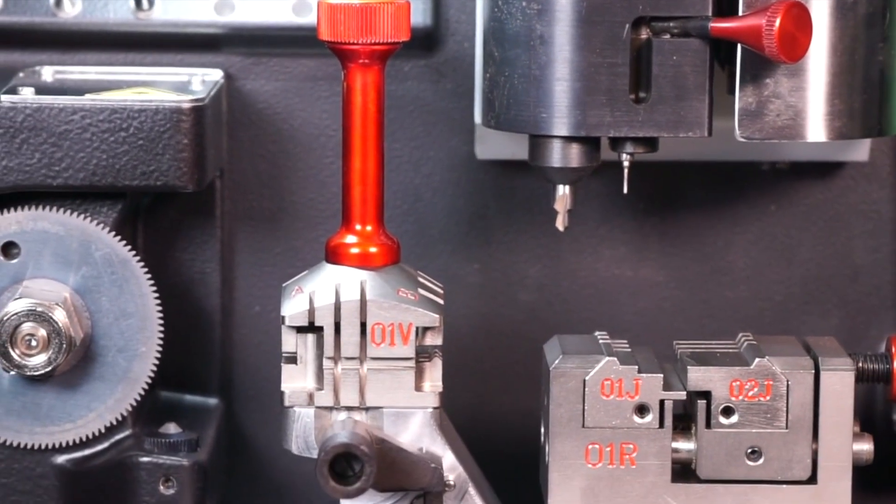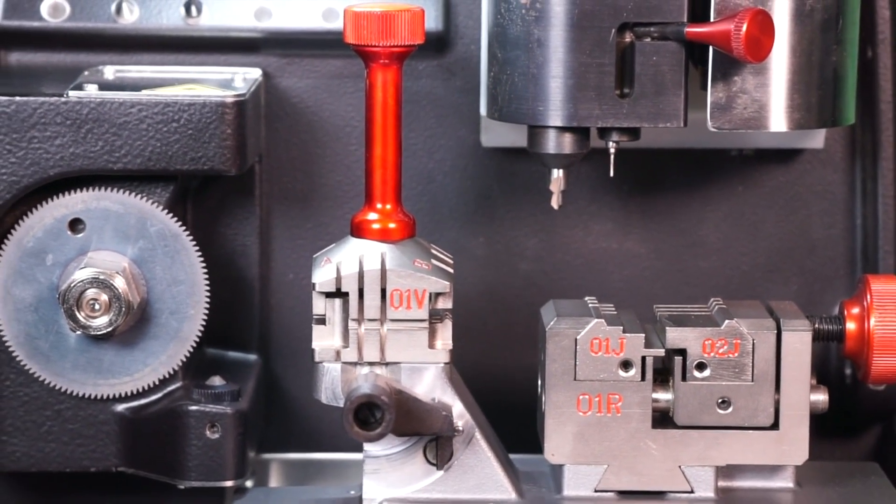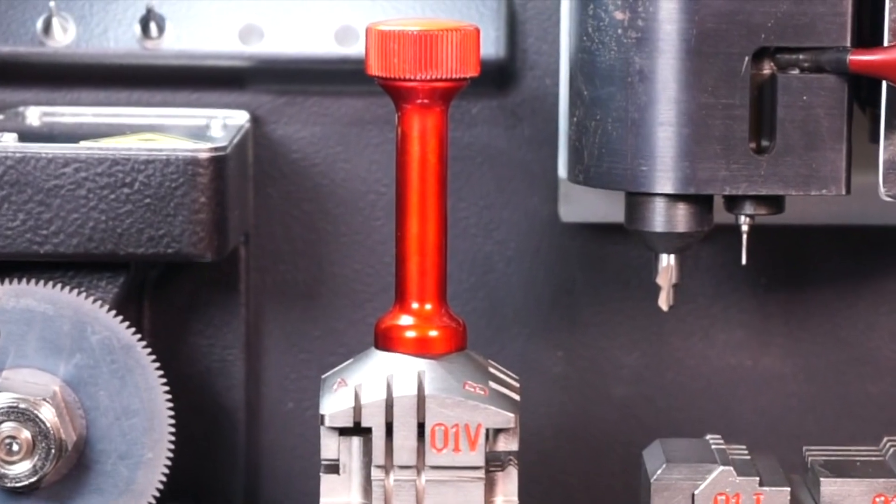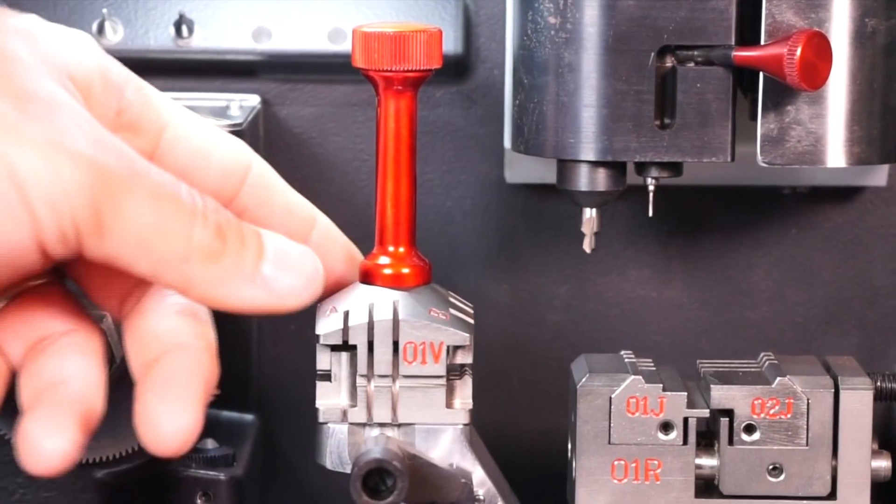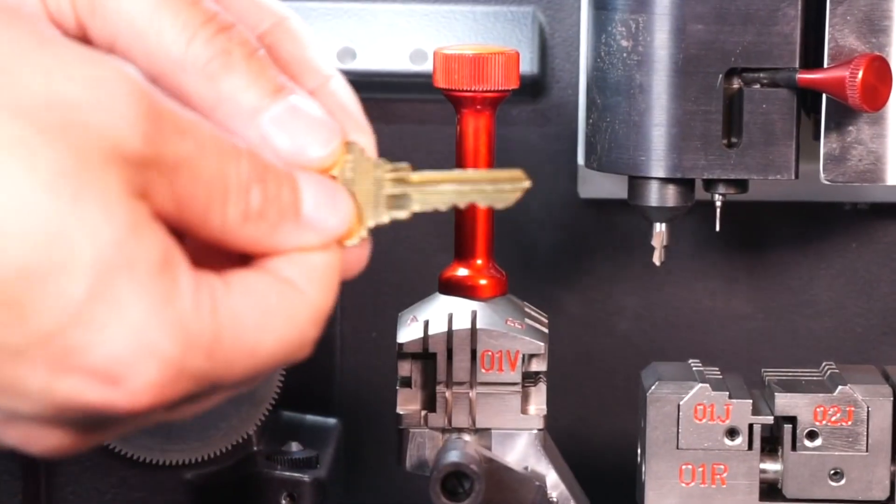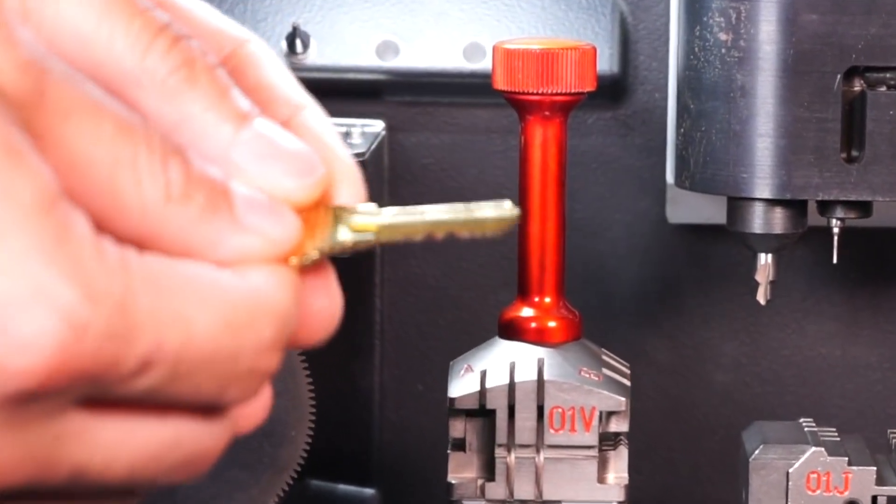In this video, we're going to show you how the Futura Pro can help you save time and money. This is a dual station machine with a left-hand side for doing edge cut style keys, such as these automotive keys and this residential key. The way this machine is able to do both types of keys is by having a four-position jaw where you can change the clamp side to suit your needs.